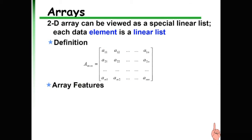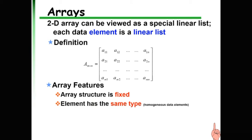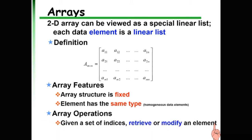Features of multi-dimensional arrays: first, the structure of the array is fixed and cannot be modified. We cannot insert or delete an element from a multi-dimensional array. Elements have the same data type — homogeneous data elements. Operations performed on arrays include, given a set of indices, retrieve or modify an element. Insertion or deletion is not supported.